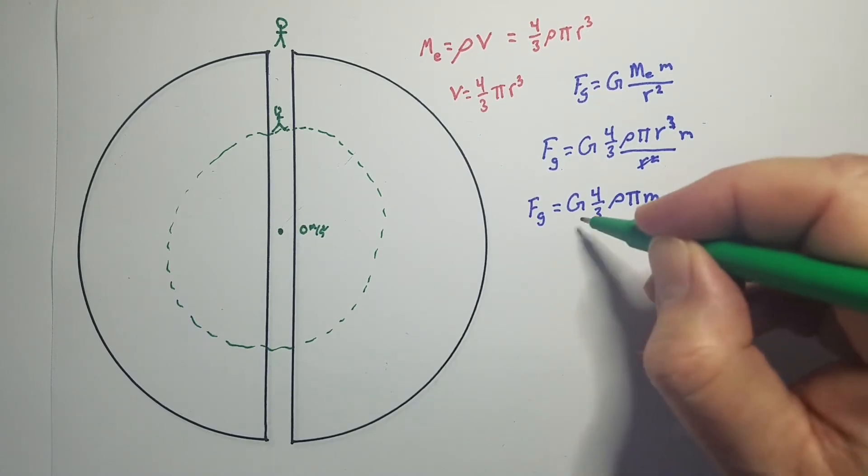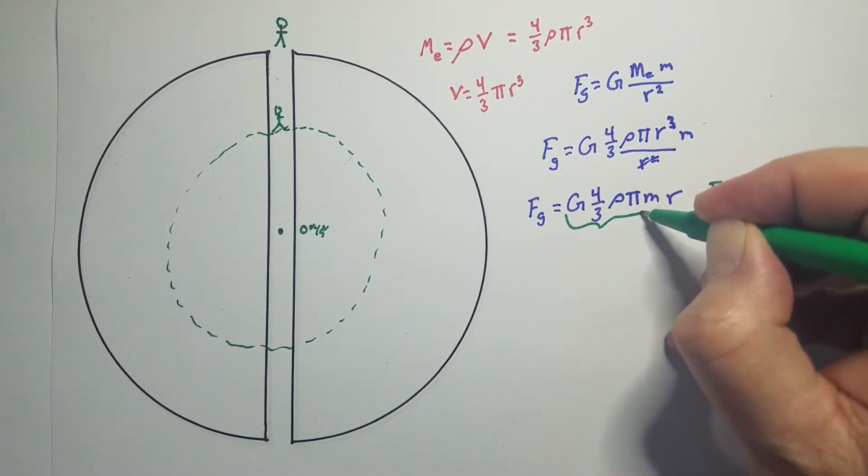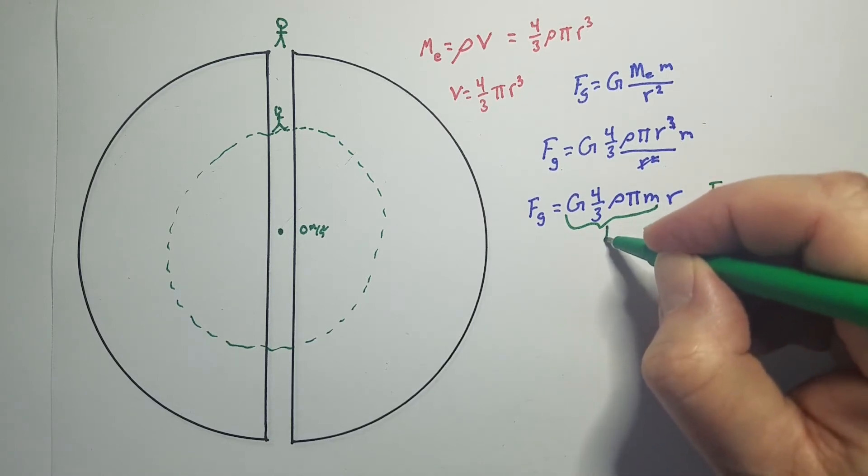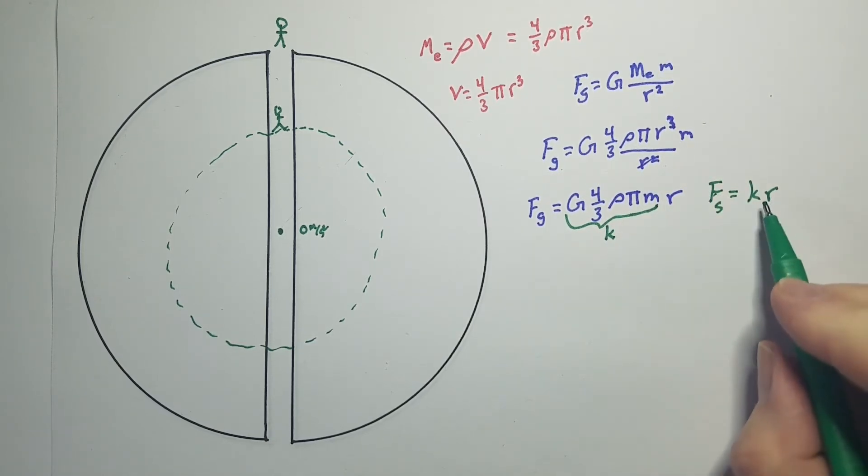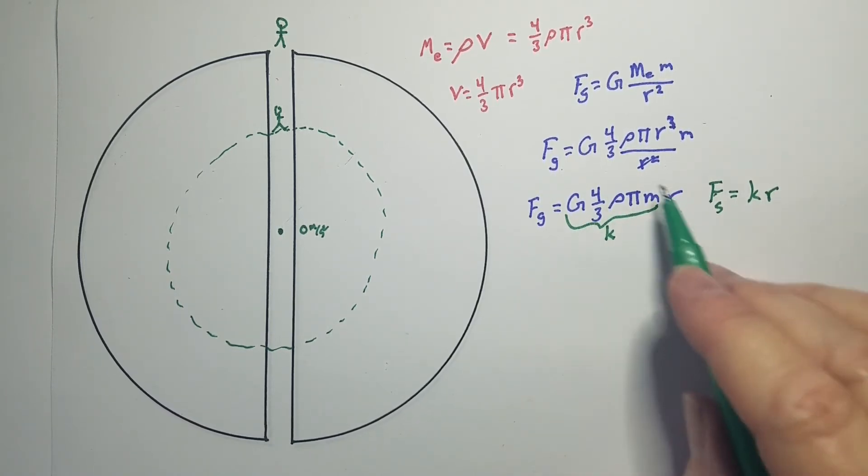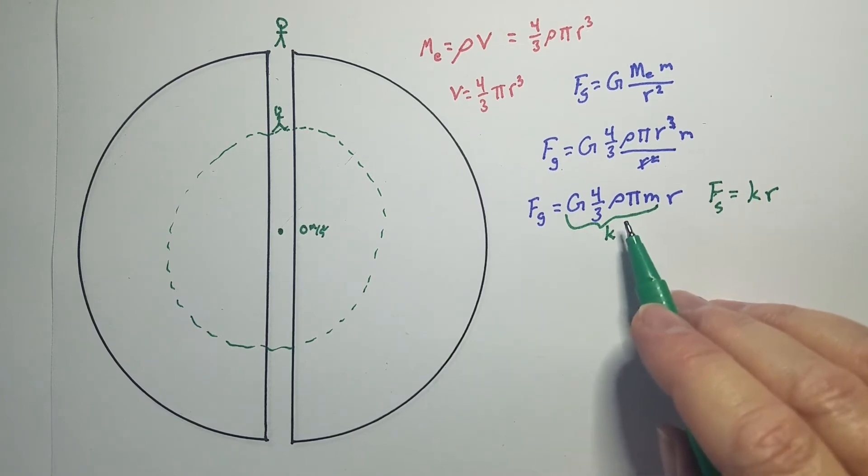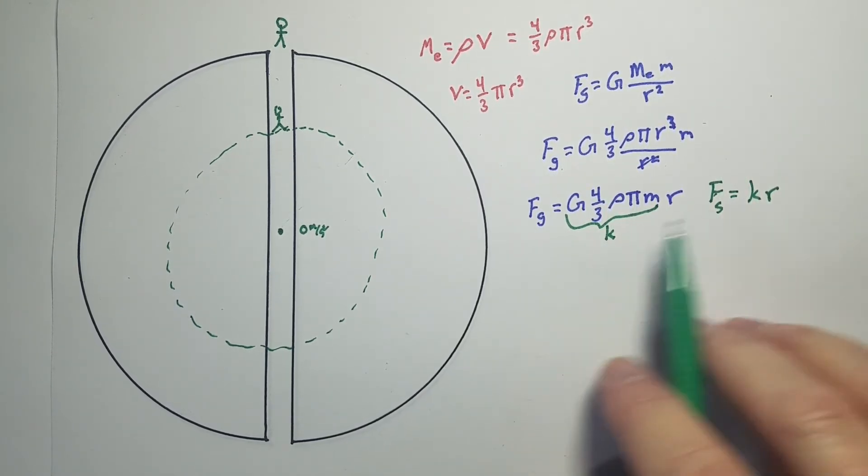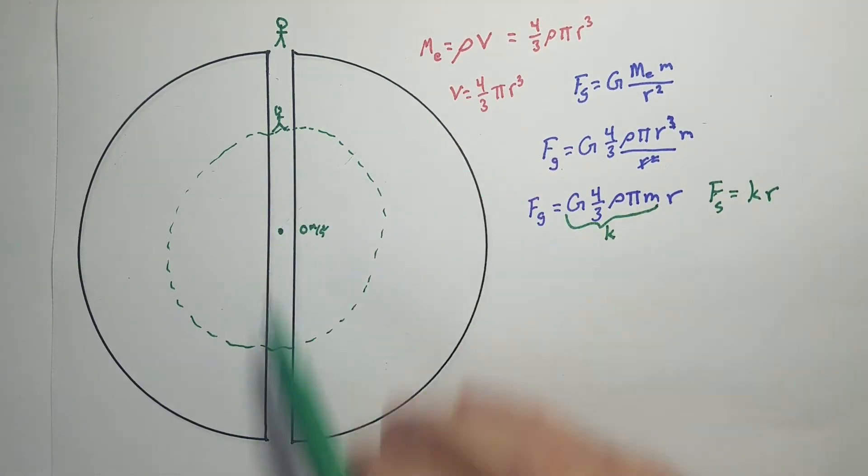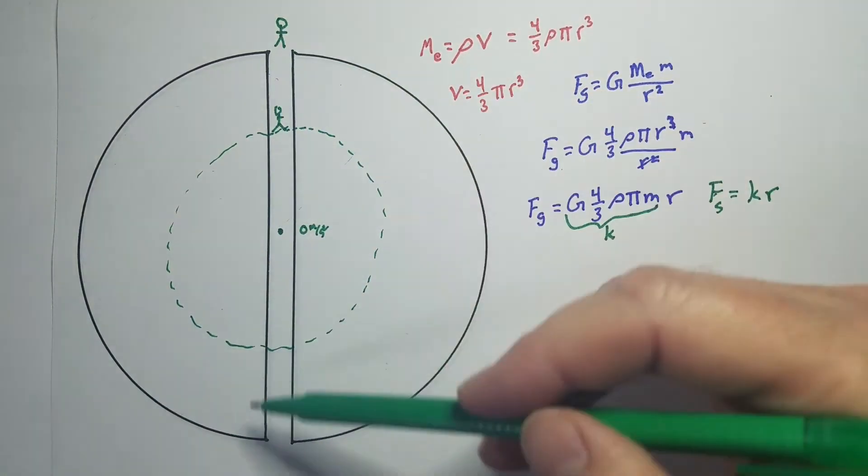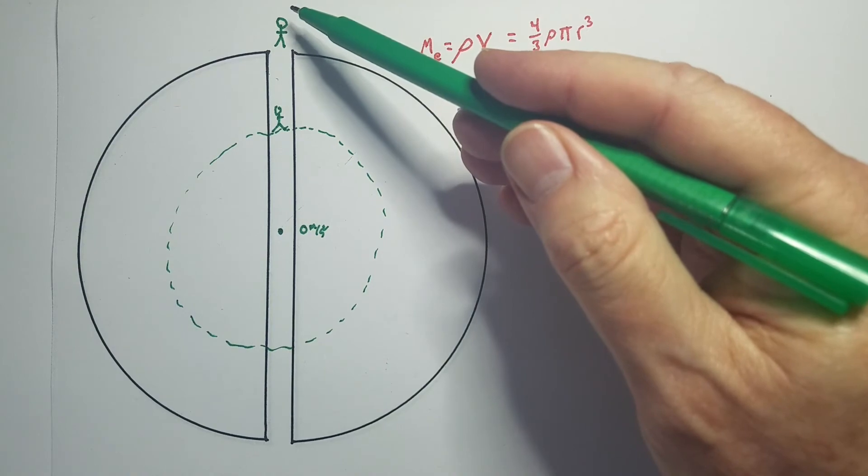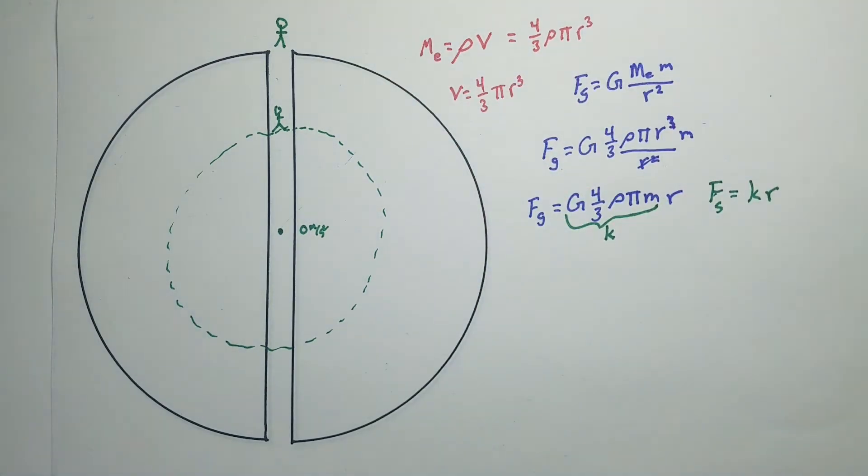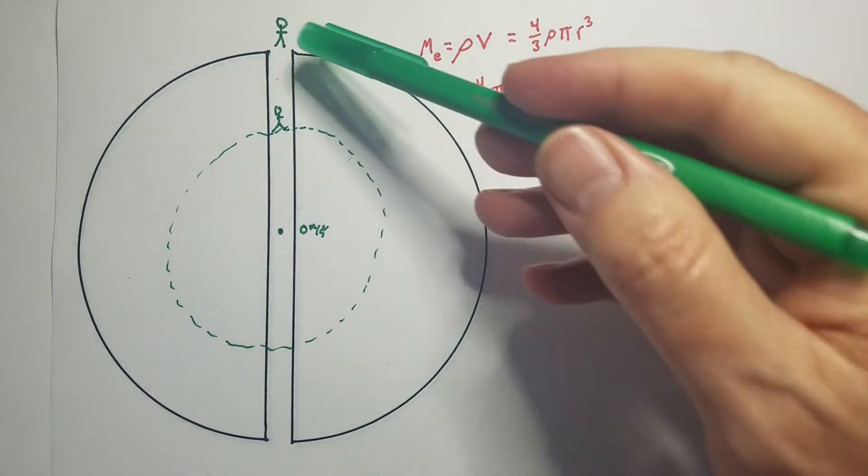So that means this bit right here, all that math right there, is going to substitute in for k, which is normally the spring constant of our spring. So that's going to be our k value here. So we're going to do a lot of substitution. So if we're going to model this as a spring, and we just want to know the period. The period is how long it takes to go down and back up again. And then we take half of that just to get down to one side.